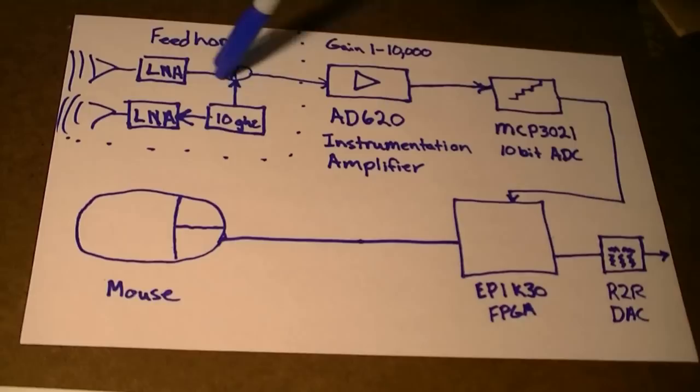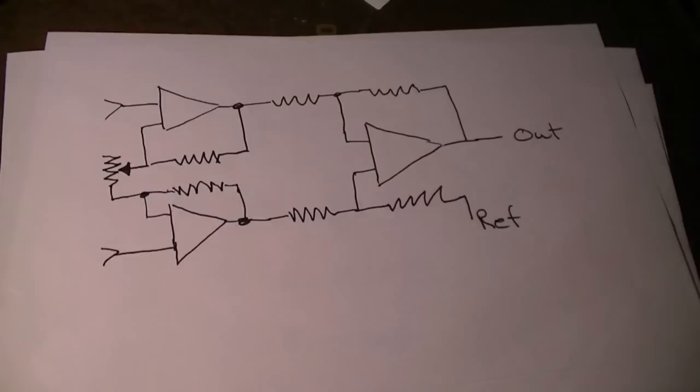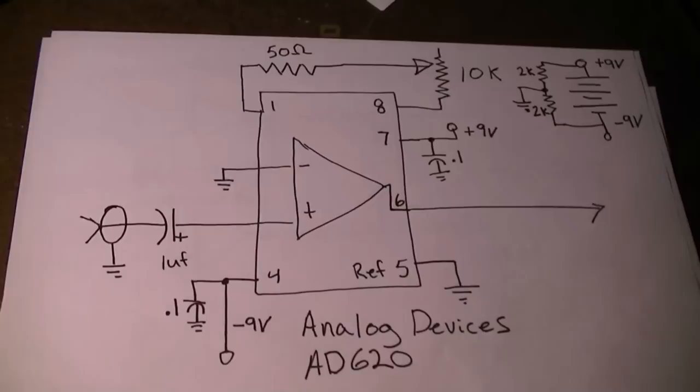In this block diagram, you can see the first thing we do with the signal after it comes out of the feed horn is we amplify it. I chose to use a single chip instrumentation amplifier from analog devices for two reasons. One, it was on my desk in a piece of foam already, that's how engineering happens sometimes, and secondly, I didn't have to wire a bunch of op amps to get it to work.